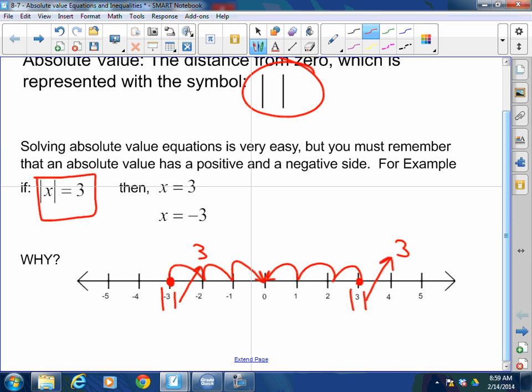If you remember that, this is a really simple lesson. So absolute value is a distance from zero and you always have two roots, a positive root and a negative root.